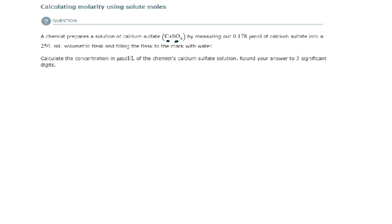So let's list here again what we are given. Well what are we given? We are given an amount of solute - what is our solute? Calcium sulfate, and the amount of solute is 0.178 micromoles.